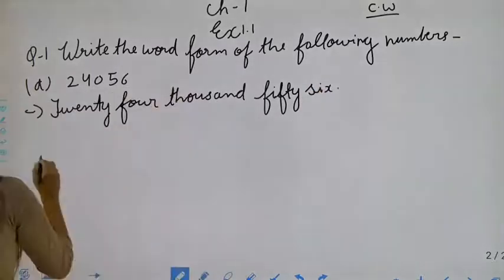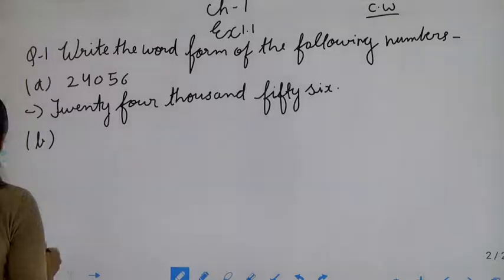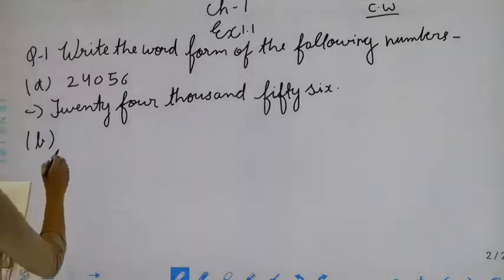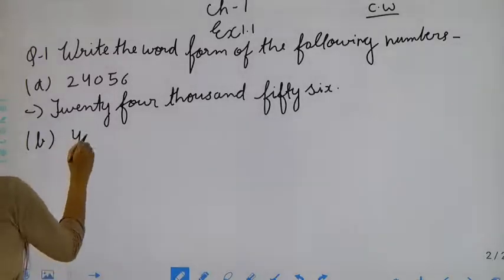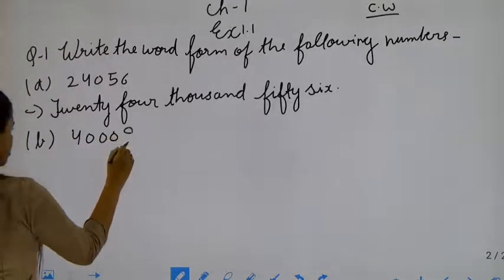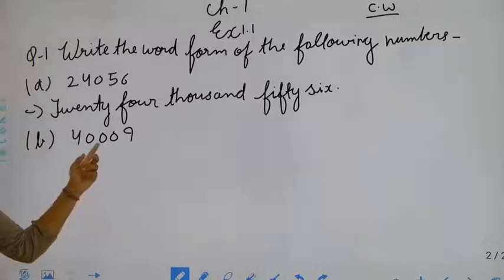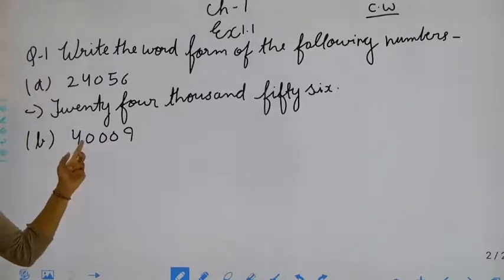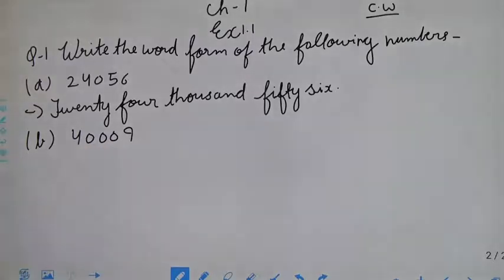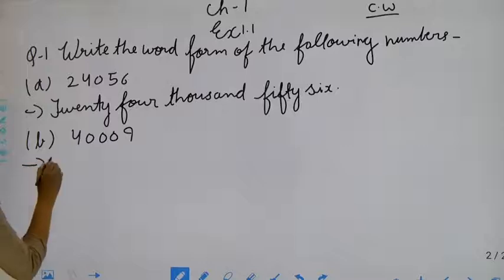Now move to the next part, that is Part B. Once, tens, hundred, thousand, ten thousand — it will be forty thousand, nine.